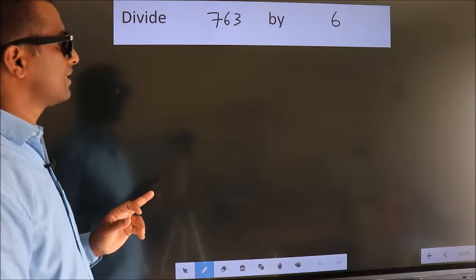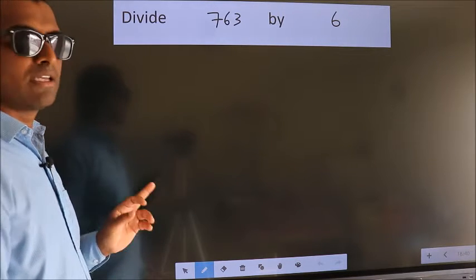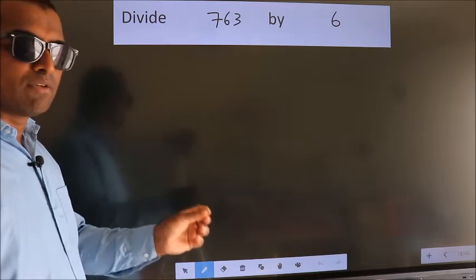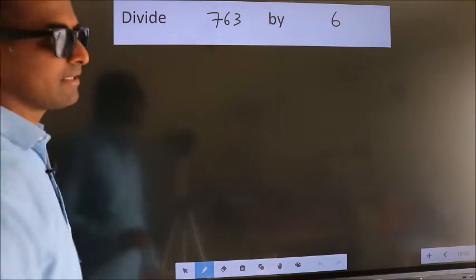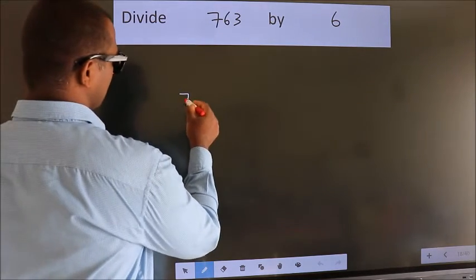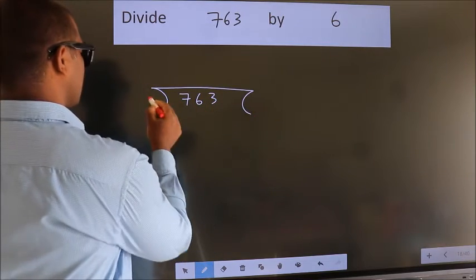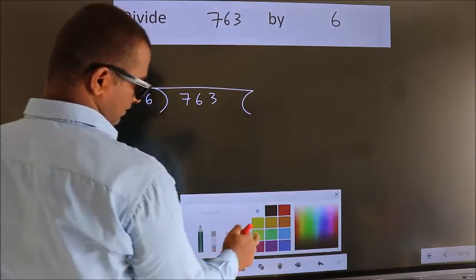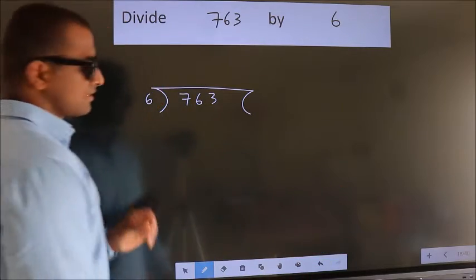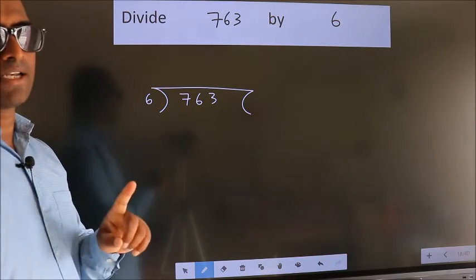Divide 763 by 6. To do this division, we should frame it in this way. 763 here, 6 here. This is your step 1.